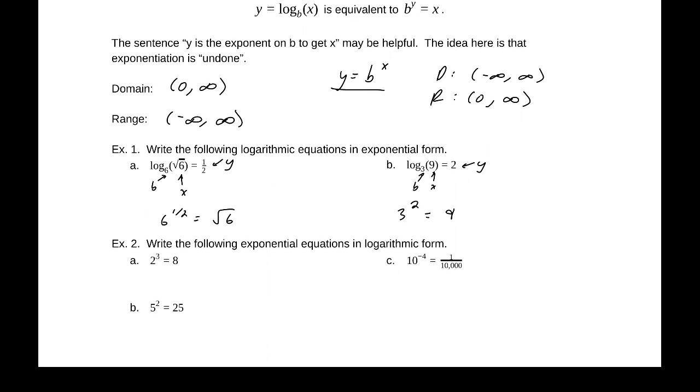All right, now we're going to go in the reverse direction. Okay, so y is the exponent that goes on b to get x. Well, in exponential form, that's our b, that's our y, and that's our x. So y is the exponent that goes on b to get x. Log base 2 of 8 equals 3.